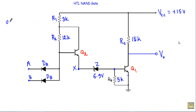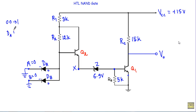Now consider the first case: input 0,0. Our output should be logic 1. Input A will be at logic 0 and input B will be at logic 0, meaning both terminals A and B are connected to ground. The positive terminal of the 15V source will be connected to the P side of DA and DB, and the negative terminal will be connected to the N side of DA and DB. That means both diodes DA and DB will be in forward bias, so replacing them with short circuits.